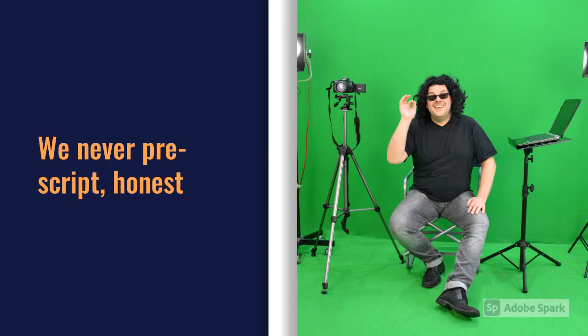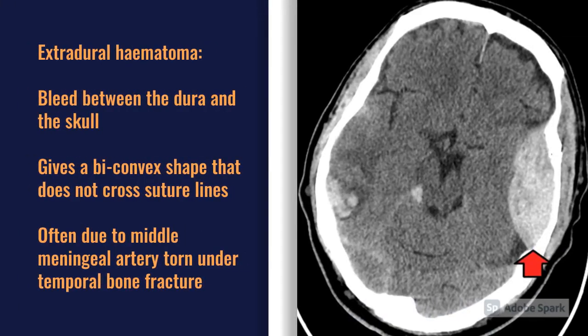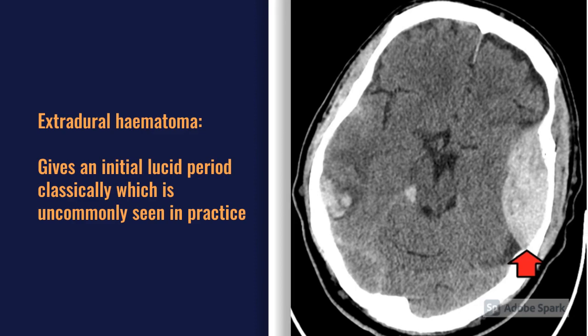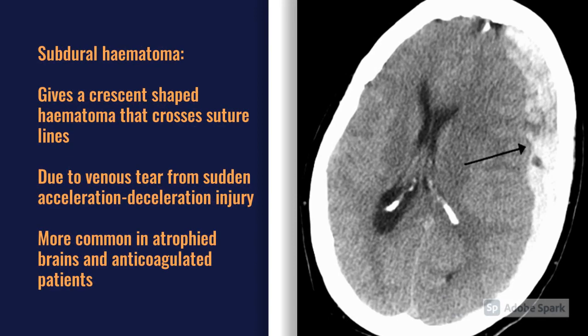The first type is an extradural haematoma. This is often due to the middle meningeal artery being torn under the temporal bone — classically from a bash to the side of the head, such as from a cricket ball or bat. Typically in textbooks and exam questions you'd find a classic initial lucid period followed by deterioration, though in real life this is quite uncommon.